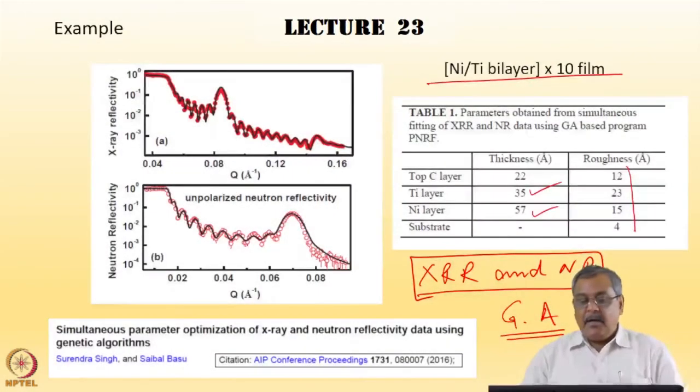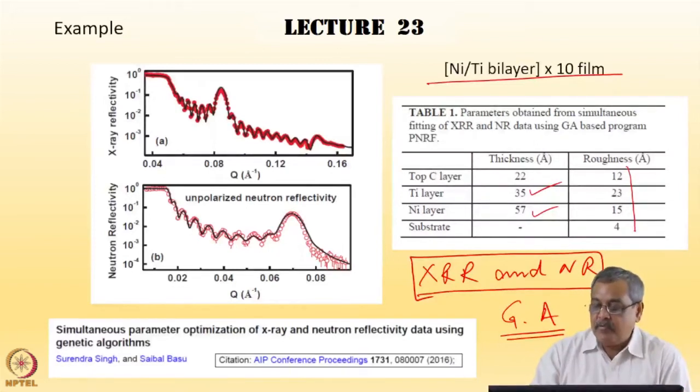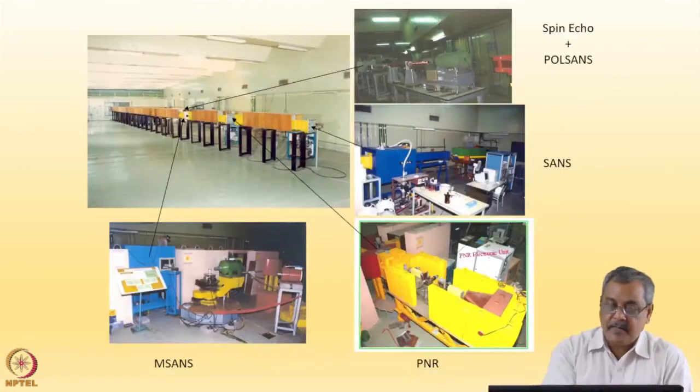I stopped with an example of simultaneous minimization of chi-square for nickel-titanium bilayer film and justified the use of genetic algorithm for such minimization. I will now take you for a tour through the various instruments available for such experiments.